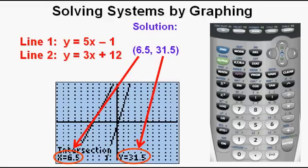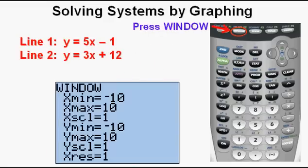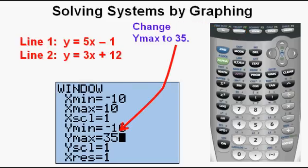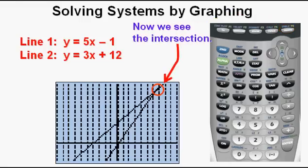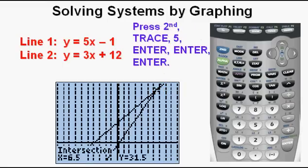We see the solution even though we don't see the intersection on the view screen. To see the intersection, we can change the window setting — press the window function key. Change y max from 10 to 35 to be able to see the intersection. Press graph. Now we see the intersection, and we can press second, trace, 5, enter, enter, enter, and we have the intersection again. This time we're able to see that intersection.